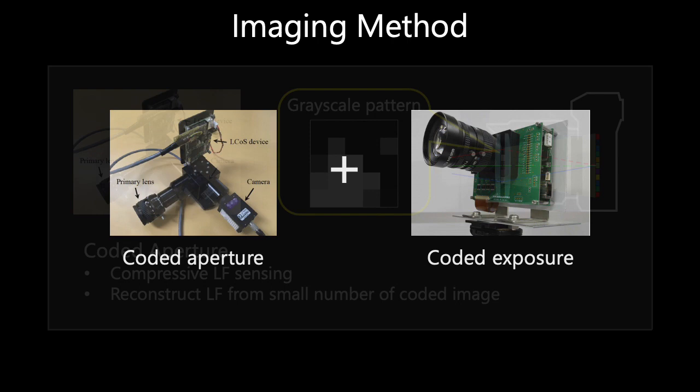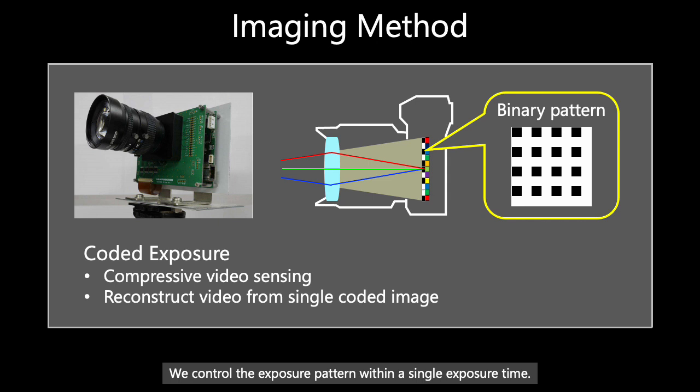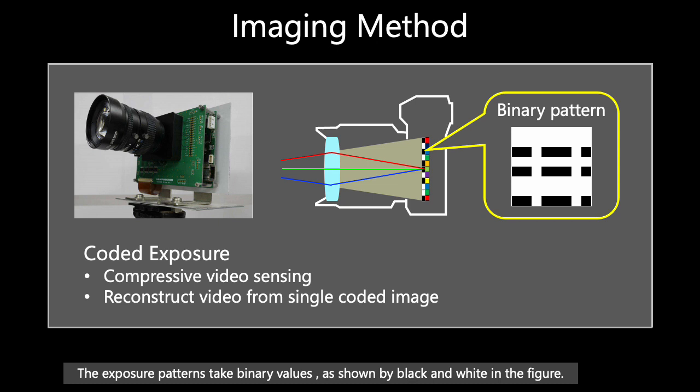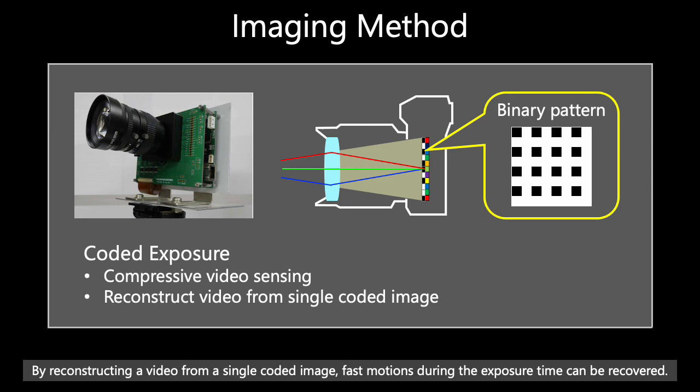Coded exposure is used for compressive video sensing. We control the exposure pattern within a single exposure time. The exposure patterns take binary values, as shown by black and white in the figure. By reconstructing a video from a single coded image, past motions during the exposure time can be recovered.